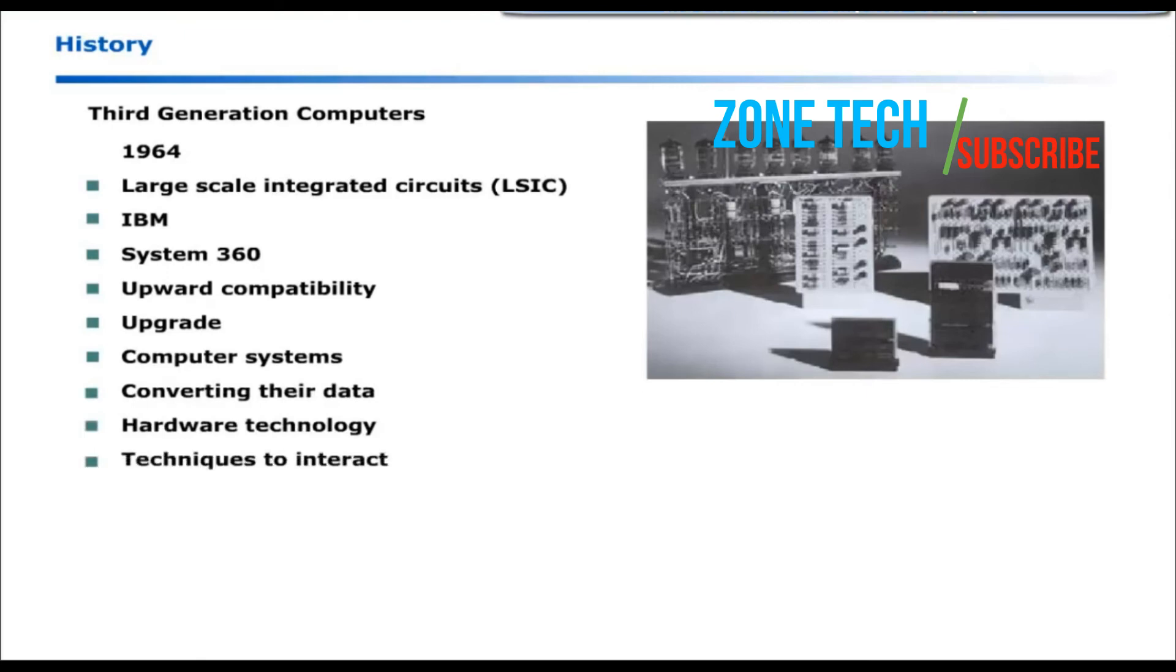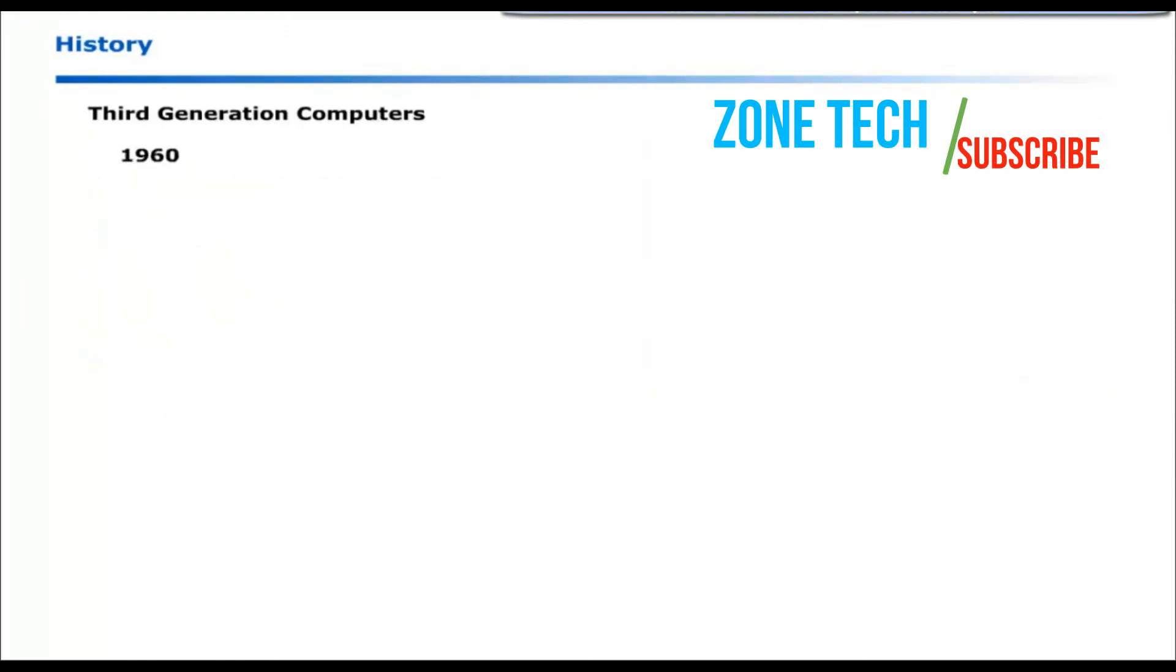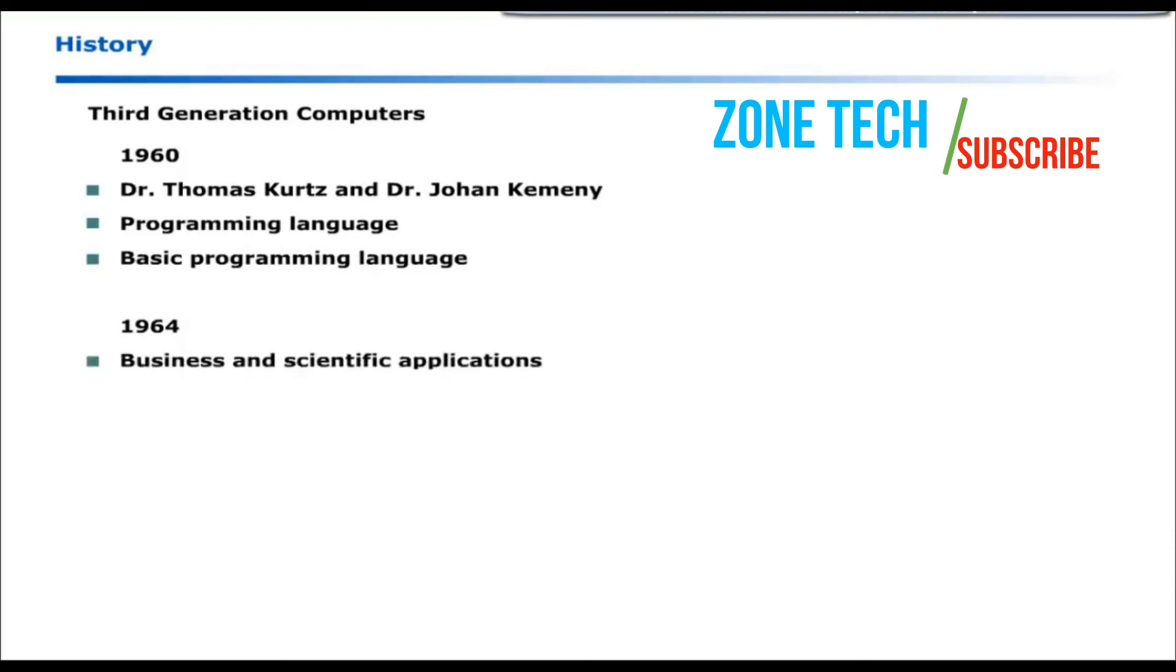Besides developments in hardware technology, scientists were busy in developing the techniques to interact with the computer to perform a variety of tasks. In 1960, Dr. Thomas Kurtz and Dr. John Kemeny started developing a programming language and introduced BASIC programming language in 1964. It became a popular programming language for business and scientific applications. BASIC was supported on many types of computers.